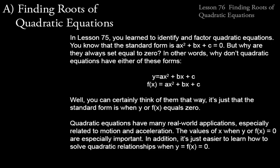Let's go ahead and talk about Lesson 76, Finding Roots of Quadratic Equations. This builds off of Lesson 75, where you learned to identify and factor quadratic equations. The standard form is AX squared plus BX plus C equals zero. But why are they always set equal to zero? Why don't quadratic equations have the form Y equals AX squared plus BX plus C, or as a function, F of X equals AX squared plus BX plus C?